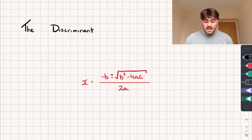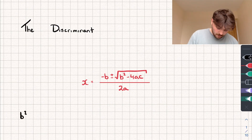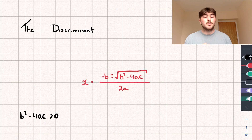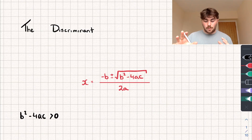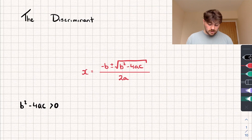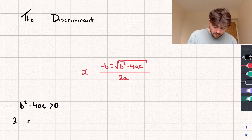So let's say we input our values of a, b and c from our quadratic, and we get the discriminant — b squared minus 4ac — and it's a positive number, so it's strictly greater than 0. Well we'd get negative b plus whatever the square root is divided by 2a, and negative b minus whatever the square root is divided by 2a, and that would give us two real solutions. So we can say: if the discriminant is positive, we have two real roots.